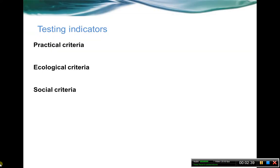For testing these indicators, we're using three different types of criteria that were set forth in the indicator selection process. All of these set up some testable assumptions that we could go back to as a cooperative and potentially revise if they failed to do what we thought they would. There's the practical criteria — can we actually monitor and model these things across the whole geography? The ecological criteria — how well are they capturing the other components of the ecosystem, such as species, processes, and habitats? And then social criteria — how does it resonate with the American public, with private land and water managers, with public land and water managers?